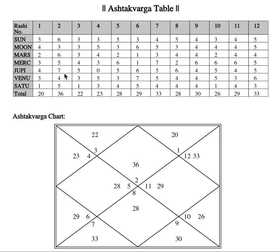Let us go to the first trine, which is also Kendra — the Lagna itself. In the first house you see Sun, so let's start with Sun. What is Sun ruling in this chart? Sun is the fourth lord — the sign Leo is in the fourth house — and the fourth house has quite a significant contribution to the Lagna. Then Moon is not very interested, but Mars — yes, very interested.